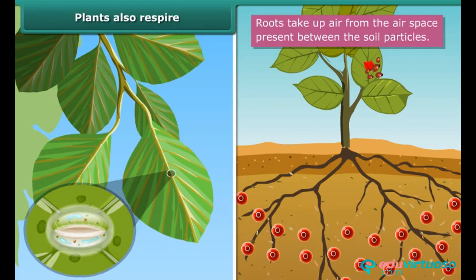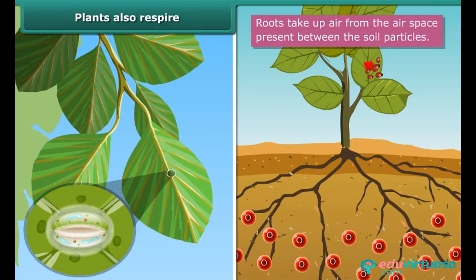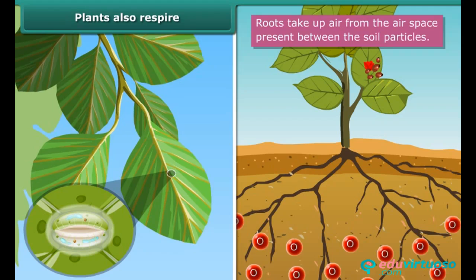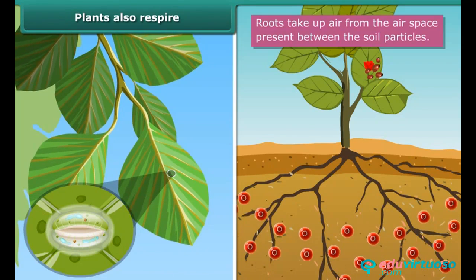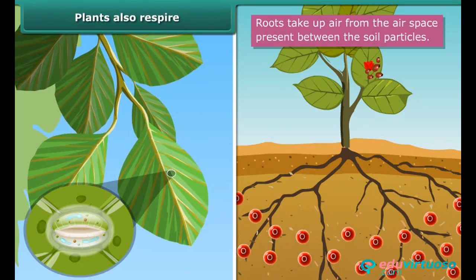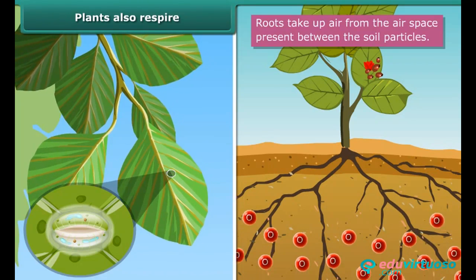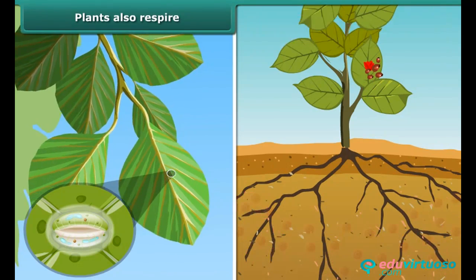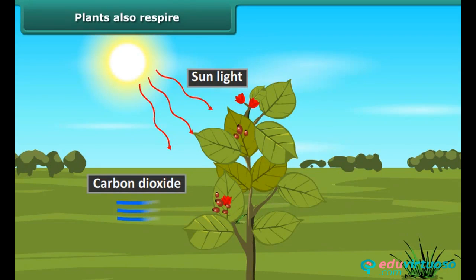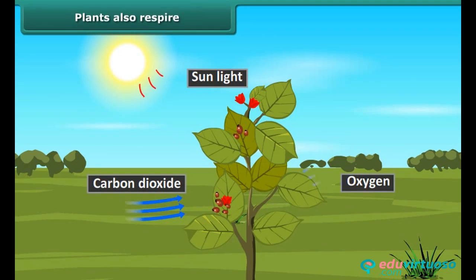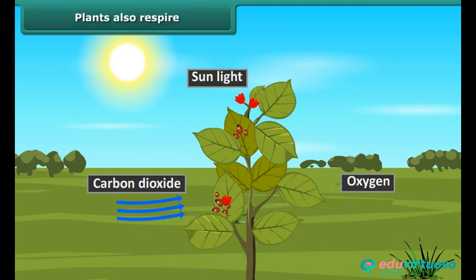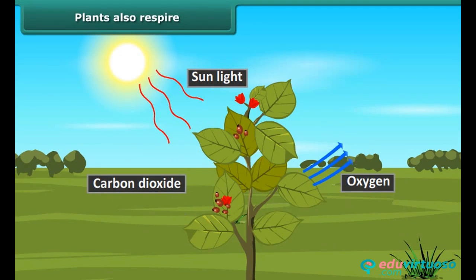In plants, respiration takes two different forms. First, the pores of the plant absorb oxygen and release carbon dioxide — these pores are present all over the plant body and even in the roots. Second, when photosynthesis takes place, plants absorb carbon dioxide and release oxygen.